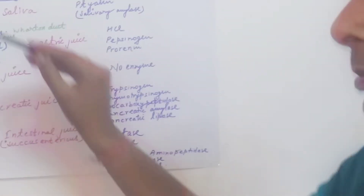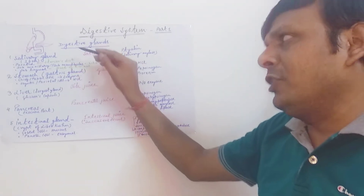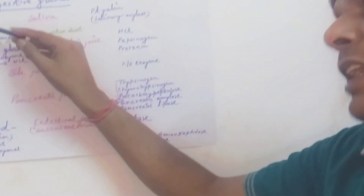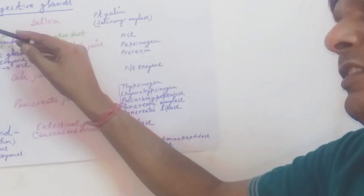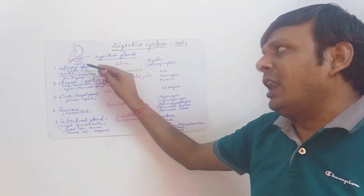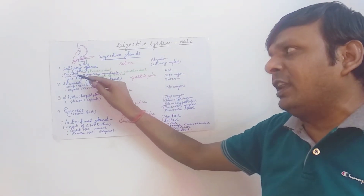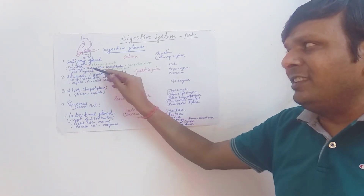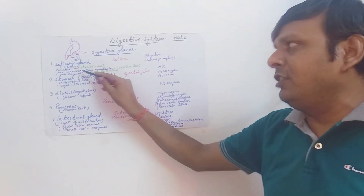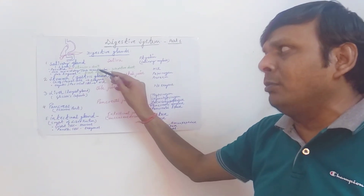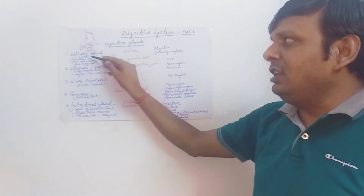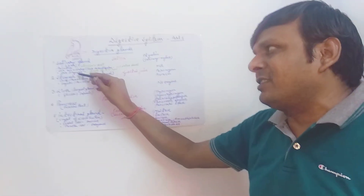First we start with the concept of salivary glands, which are located in the mouth. There are three pairs of salivary glands in humans. The names of the three pairs are: parotid gland, submaxillary gland (also termed as submandibular gland), and sublingual gland.